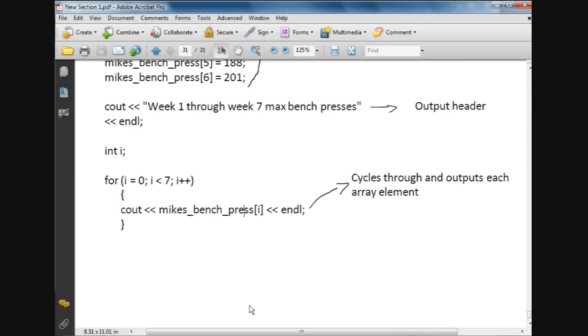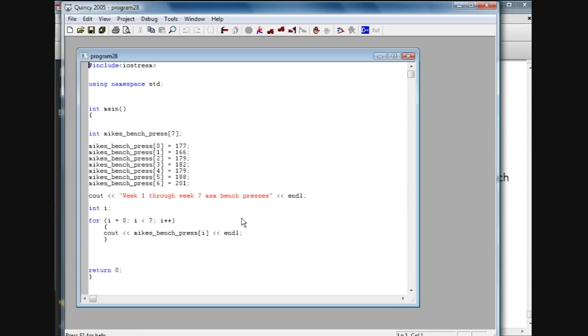So I'll flip over here to Quincy. And we see, basically right from the notes, this is exactly what I just showed you in the notes. We have the array name, max bench presses, integer data type, seven elements in there.